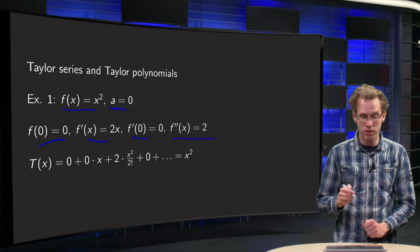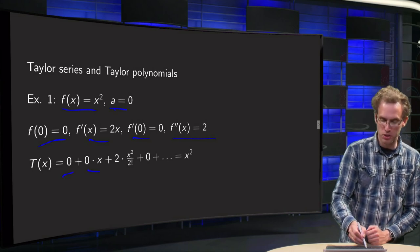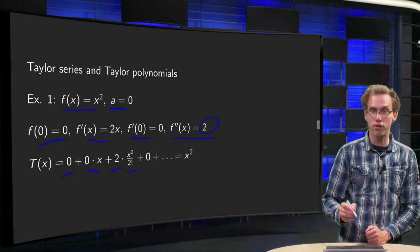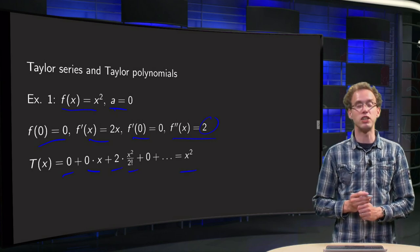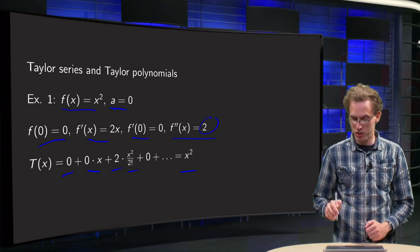So what happens if you write down the Taylor series? Well you get 0 + 0·x + 2·x²/2! + 0 + ... = x². So the Taylor series of x² is just x².